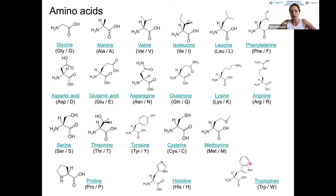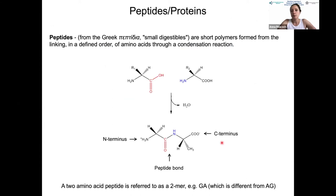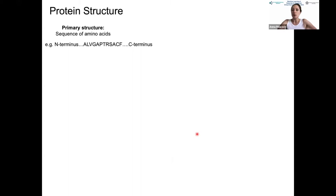Bringing monomer units together, we take two amino acids and perform a condensation reaction, releasing a molecule of water to generate a peptide bond—the carbonyl from the C-terminus of one amino acid and the NH from the primary amine of the other. The smallest peptide we can form is a dimer made of two amino acids. For example, glycine followed by alanine gives us a GA peptide, which differs from AG because reversing the order changes which side chain is adjacent to each terminus.